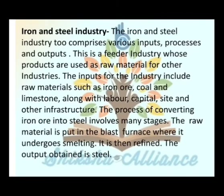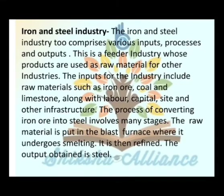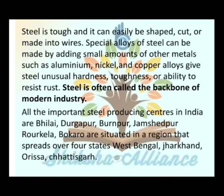The process of converting iron ore into steel involves many stages. The raw material is put in a blast furnace where it undergoes smelting and is then refined. The output obtained is steel. Steel is tough and can easily be shaped, cut, or made into wires. Special alloys of steel can be made by adding small amounts of other metals.